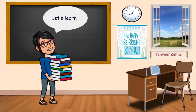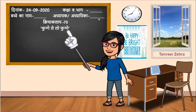First of all, you will write on your work today. Today's date is 24-9-2020. Kaksha Vabhaag — you will write your child's name. Adhyaapak slash Adhyaapika — here you will write your teacher's name. Kaksha Vabhaag No. 70.